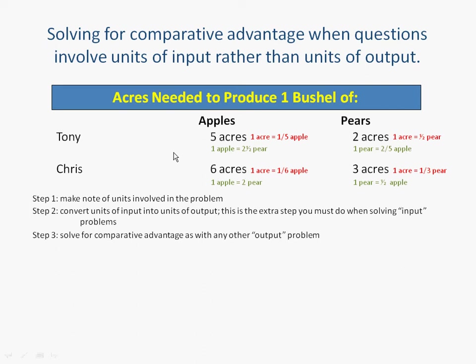Chris has one-sixth of an apple, so we multiply by six to get one apple, and multiply one-third by six, which gives us six-thirds, which is two. So for every apple Chris produces, he's going to give up two pears. Over here, Chris has one-third of a pear. To make that a whole, we multiply by three, and take one-sixth times three, which gives us one-half. So when Chris produces a pear, he gives up half an apple.